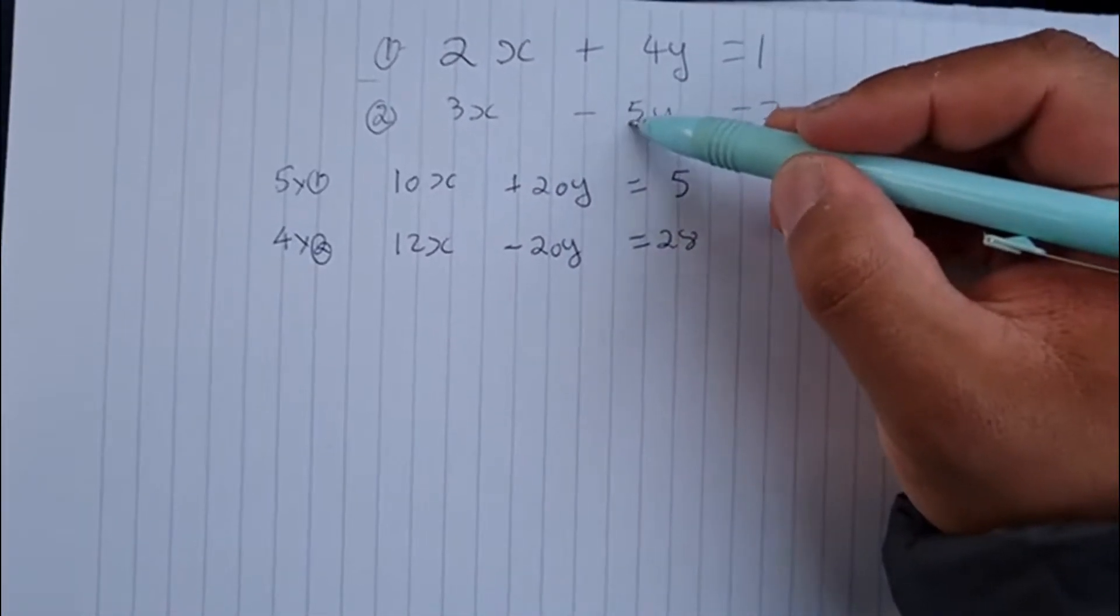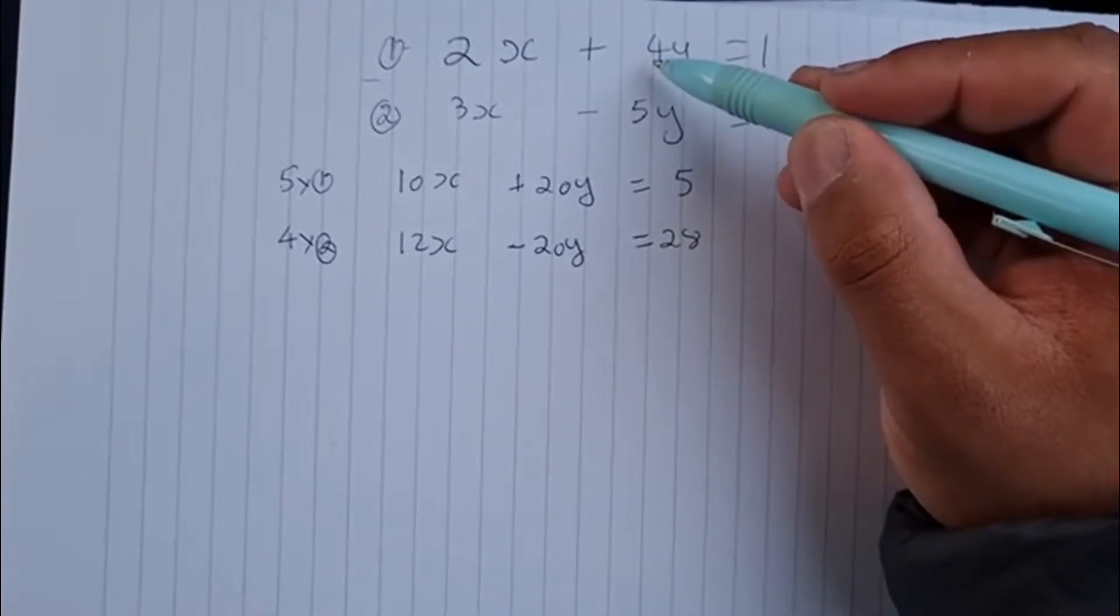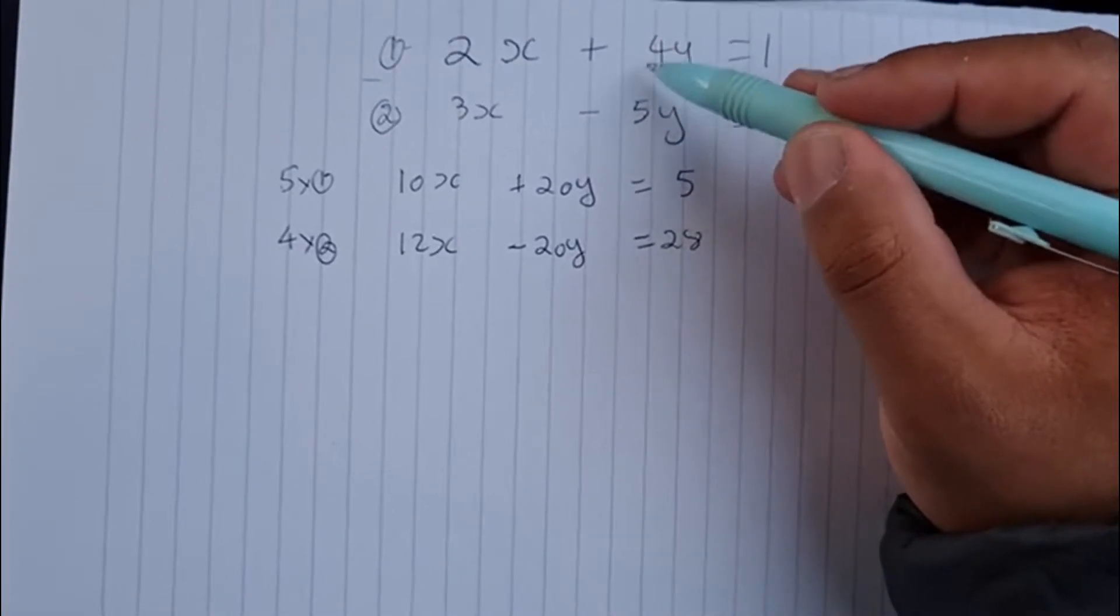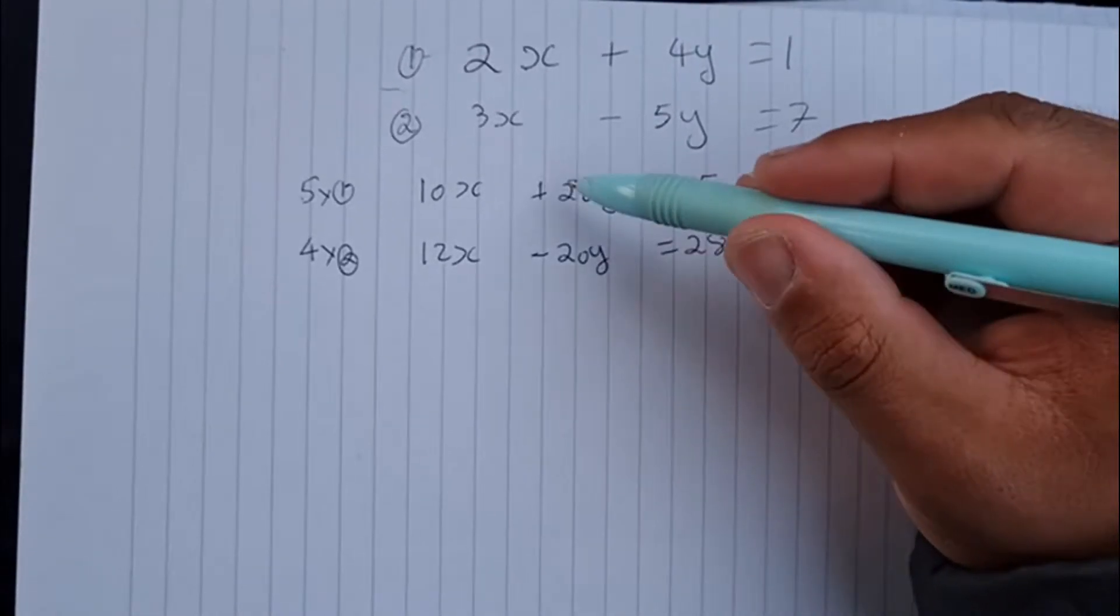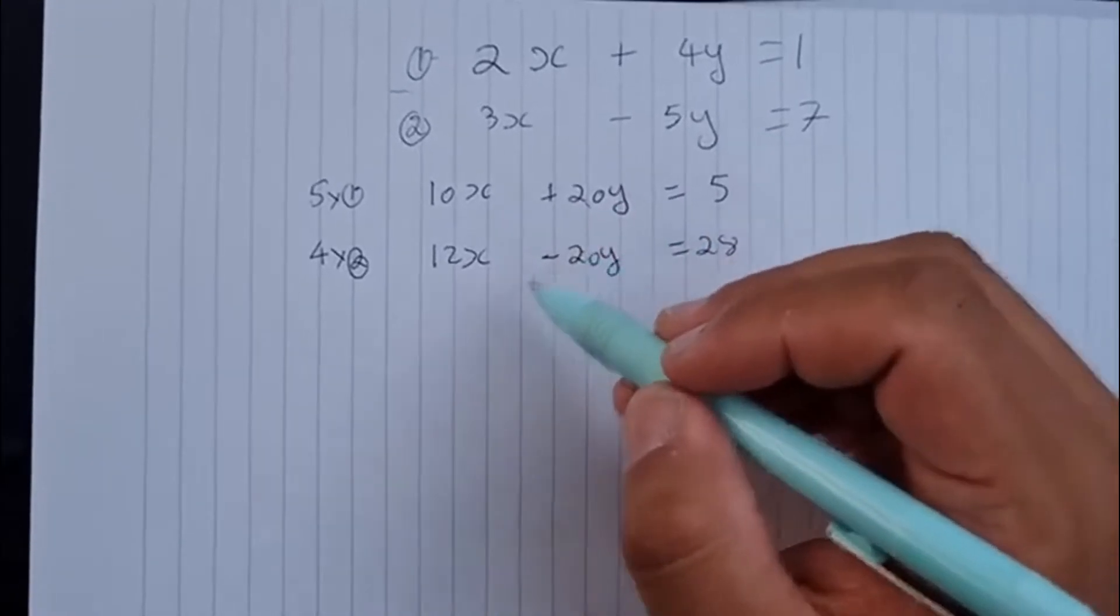And you can see I've times the first one by 5, which is the coefficient of the second equation, and the second equation by 4, being the coefficient of the first equation, in order to make the coefficients both 20 for y. Well, minus 20 for the second one.